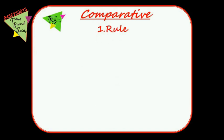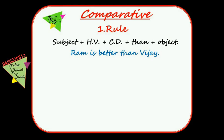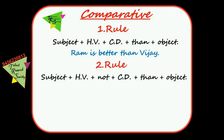Comparative degree Rule 1: Subject + helping word + comparative degree + than + object. For example, 'Ram is better than Vijay.' Here subject is Ram, helping word is 'is,' comparative degree of 'good' is 'better,' followed by 'than,' and object is Vijay.